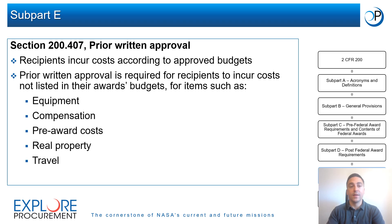After receiving an award from NASA, recipients may begin incurring costs outlined in their approved budget. For certain costs, recipients will need to obtain prior written approval from NASA if those costs are not listed in the award's budget. Such items include, but are not limited to, equipment, compensation, pre-award costs, real property costs, and certain travel costs.